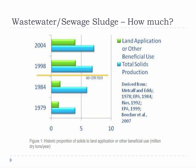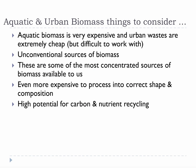Wastewater sludge, also known as biosolids, are a fairly concentrated source of biomass, somewhere on the order of 7 to 8 million dry tons a year these days. That isn't nearly as much as landfills, but it is a significant source of fairly homogenous biomass generally located next to urban centers.